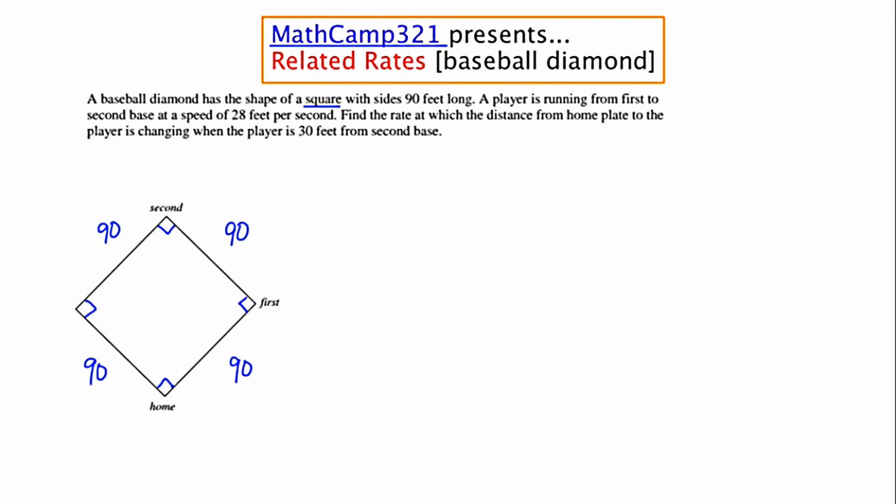Now the player is running from first base to second base at a rate of 28 feet per second. So the player moves in this direction at 28 feet per second. So at some point we're going to need to establish a variable for this length and then say that the rate is 28 feet per second.